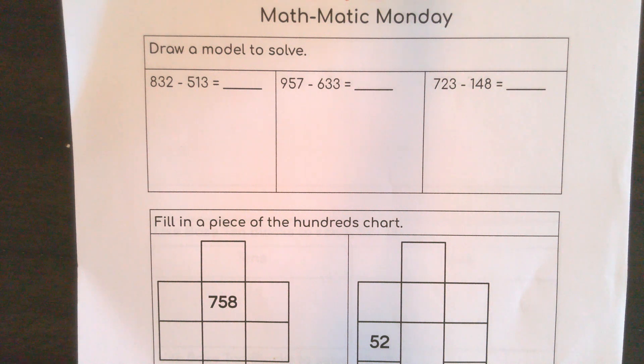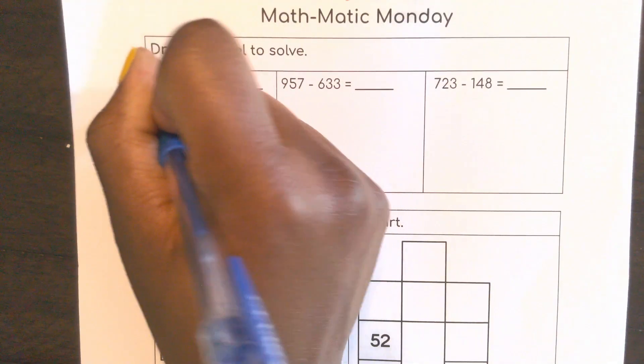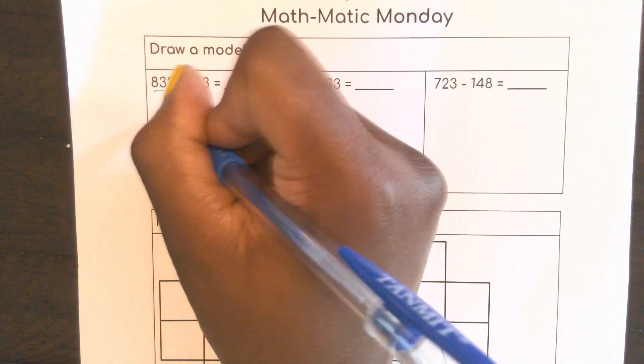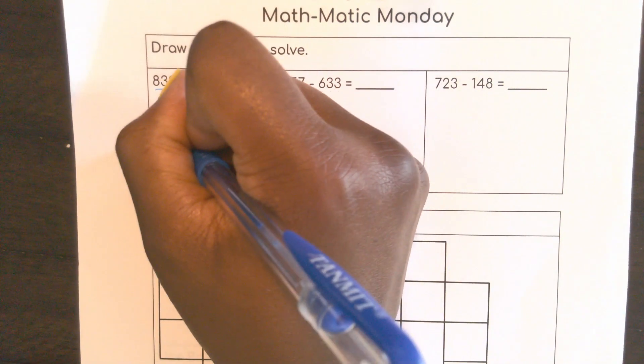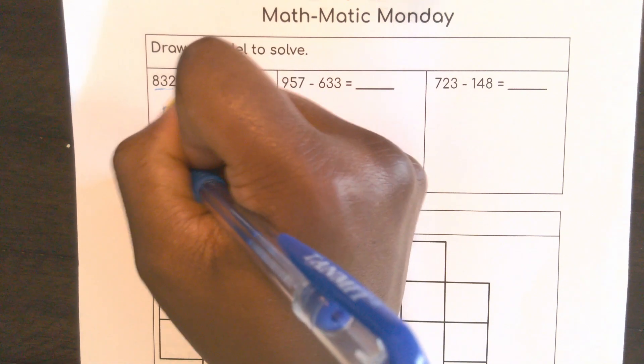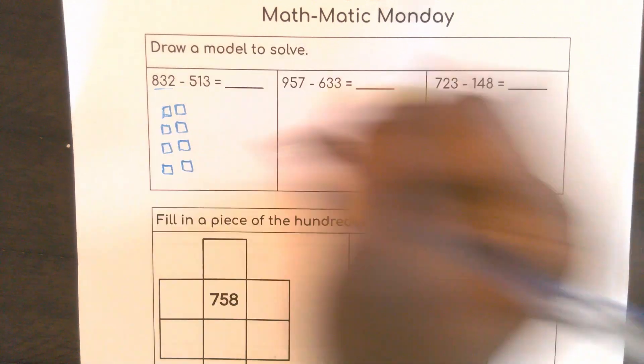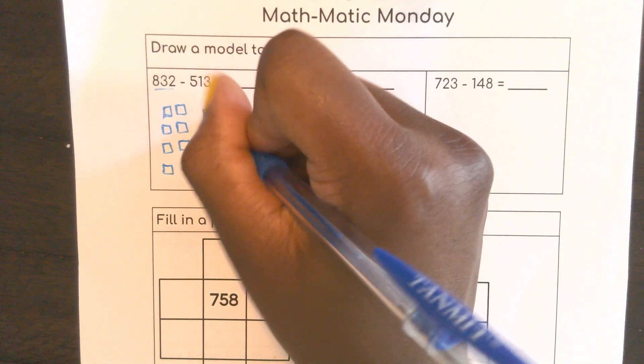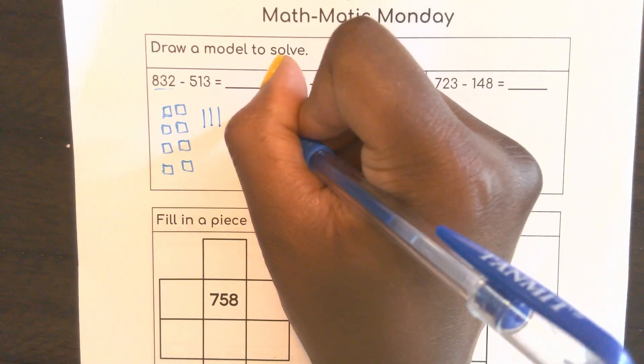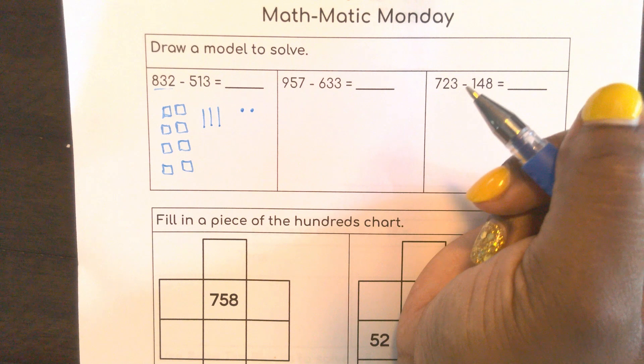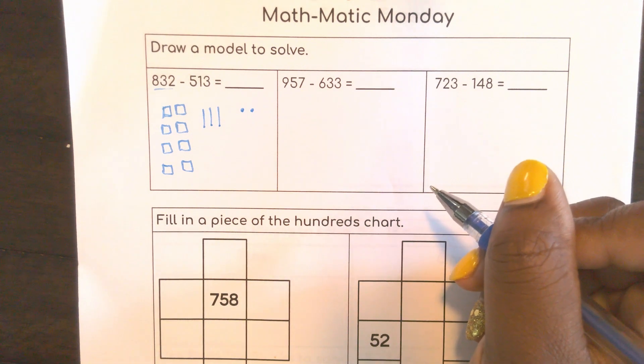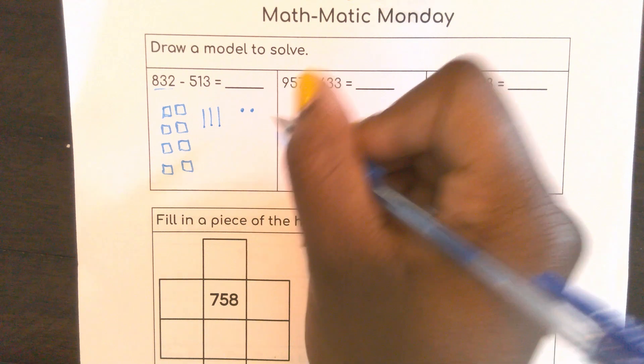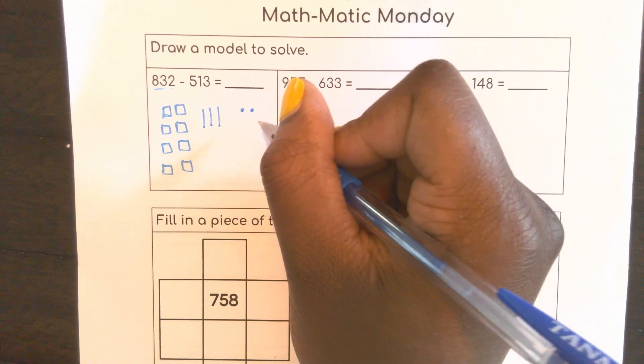Let's look here at drawing a model to solve. Remember how we can show this first number? We can do 800s: 400, 500, 600, 700, 800. We have our three tens and our two ones, and we are subtracting 513.